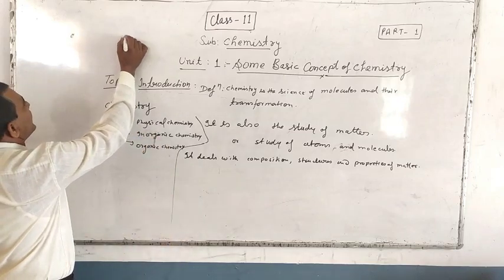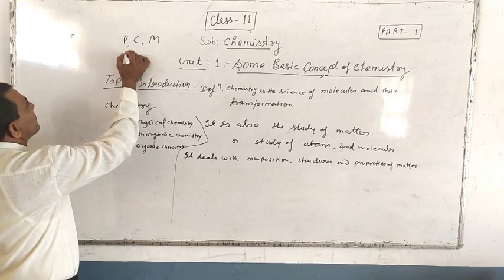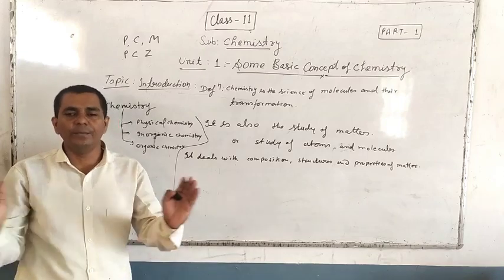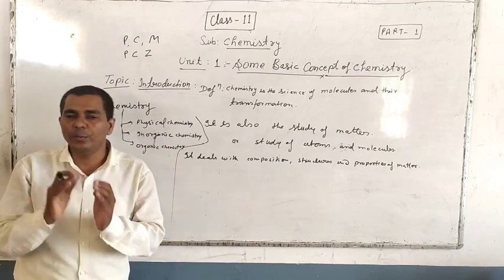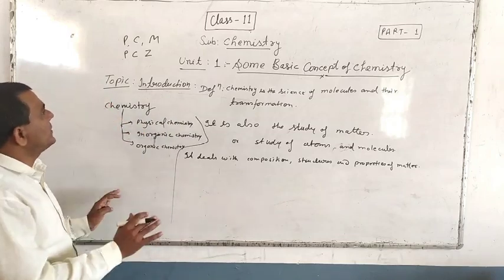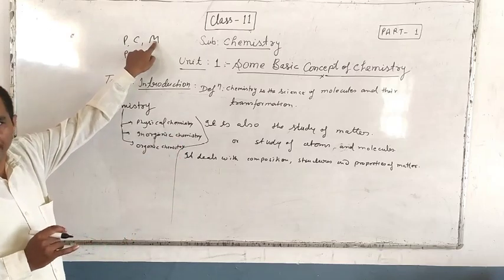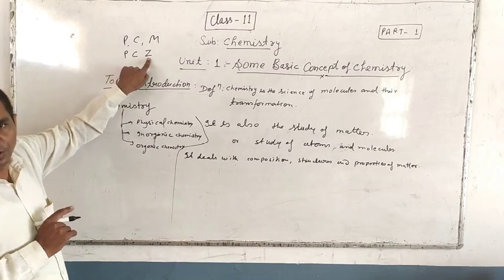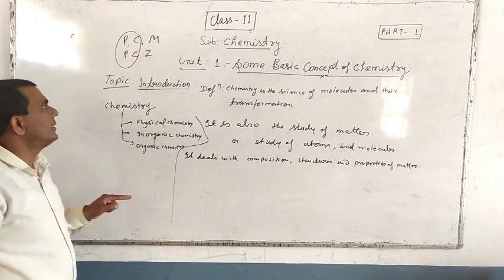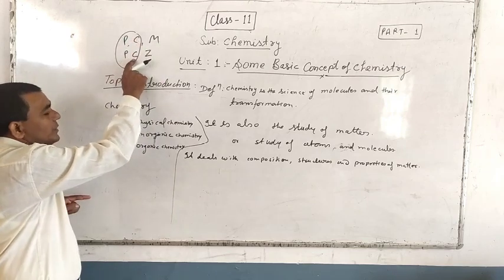What are the parts divided? Math group and bio group. There are other parts like commerce group, arts group and so on. Math group studies physics, chemistry, and math. In bio group, two subjects are common: physics and chemistry. Physics and chemistry are studied in both groups.